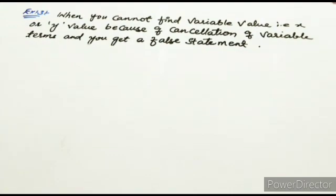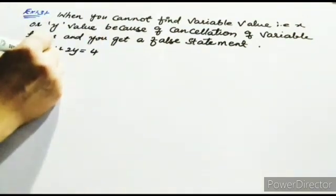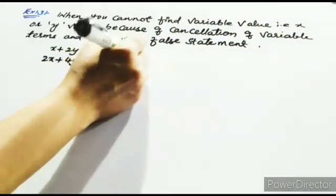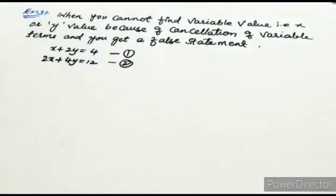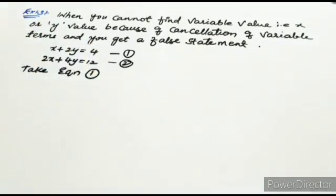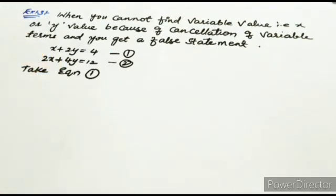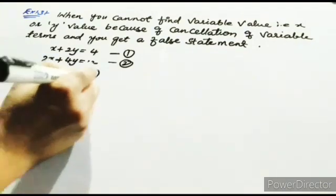So that you get a clear understanding of the substitution method, we take the example: x plus 2y equal to 4 as equation 1, and 2x plus 4y equal to 12 as equation 2. Check whether these equations satisfy the condition for a pair of linear equations in two variables. After satisfying the condition, take any one equation — whichever has smaller coefficients. Here equation 1 has coefficients 1 and 2, while equation 2 has coefficients 2 and 4, so I am taking equation 1.